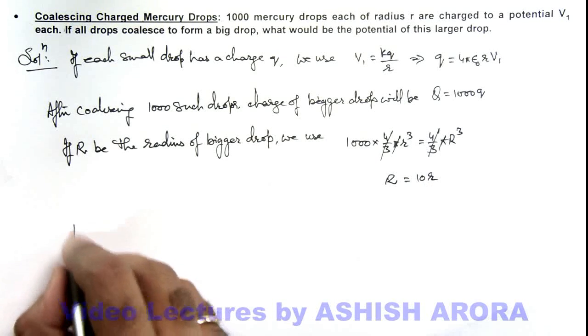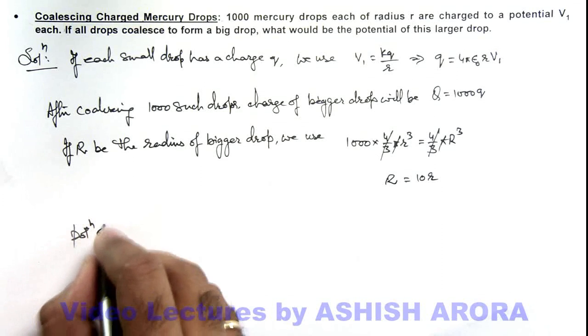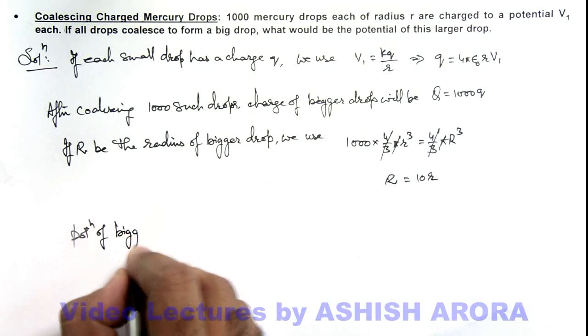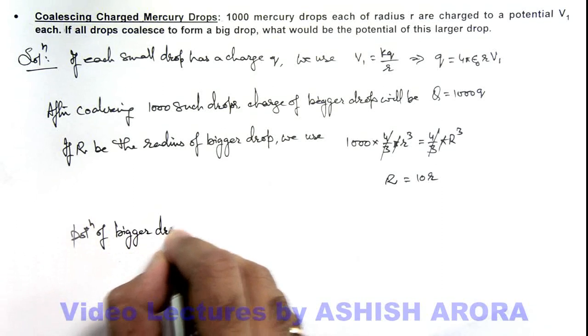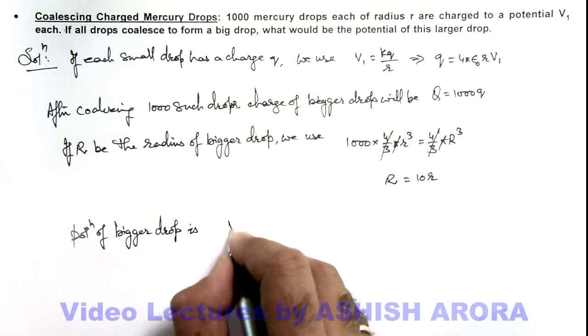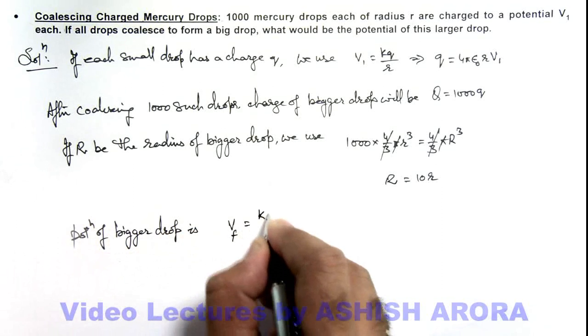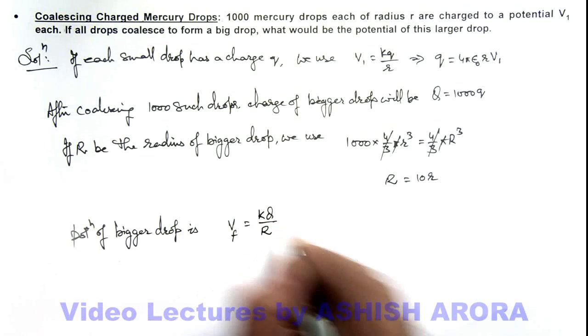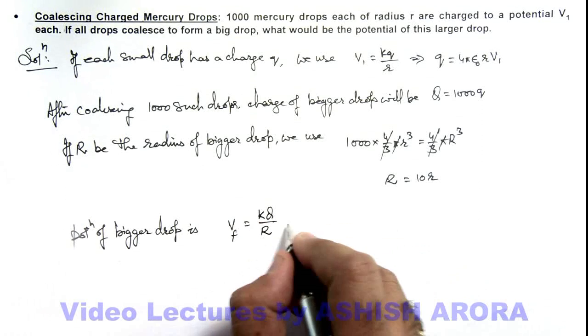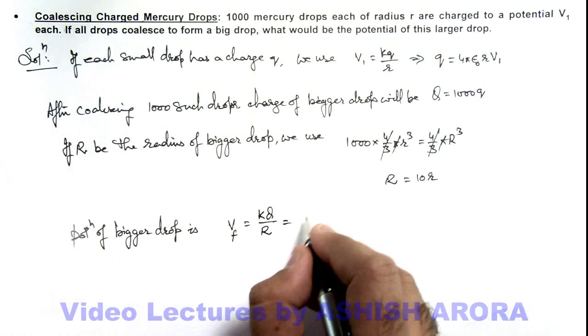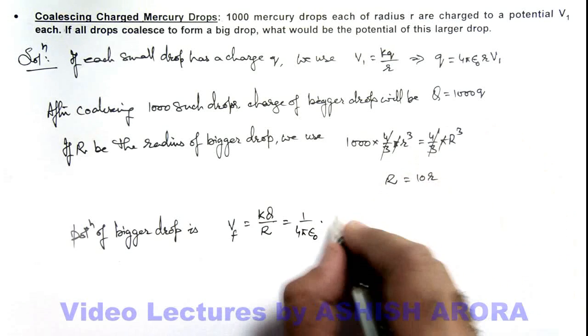So finally, we can write the potential of the bigger drop, the larger one, as: final potential V₂ = kQ/R, which are the charge and radius of the bigger drop. So this is 1 over 4πε₀.